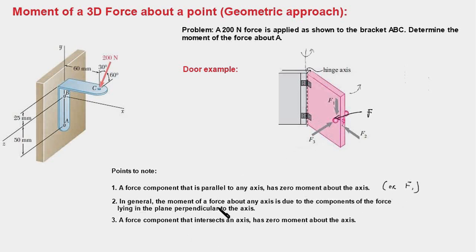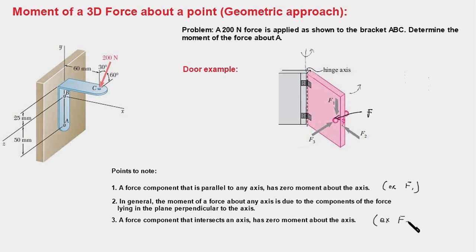In general, the moment of a force about any axis is due to the components of the force lying in the plane perpendicular to that axis. F2 and F3 lie in a plane normal to the vertical axis, but F2 still has no moment because it intersects the axis. This leads to our next point: a force component that intersects an axis has zero moment about that axis — as with F2. Only F3 has any moment about the vertical axis. Keep these points in mind as we apply the geometric method to our problem.